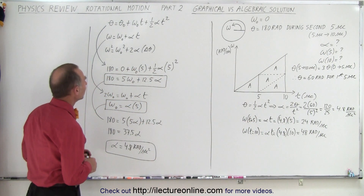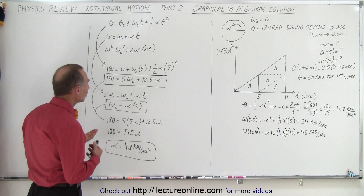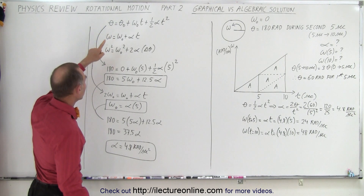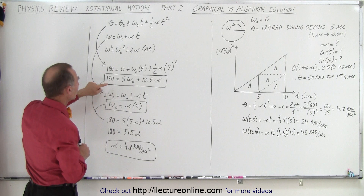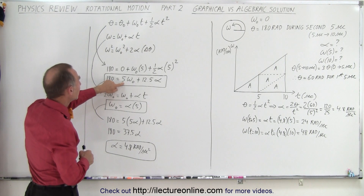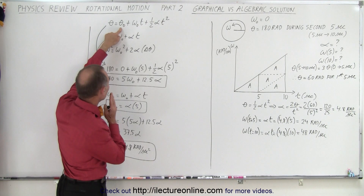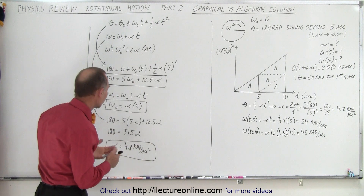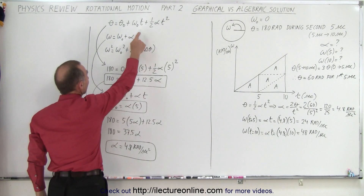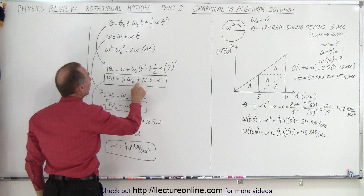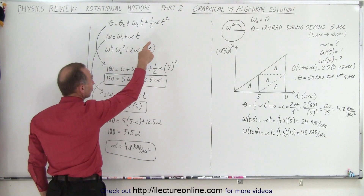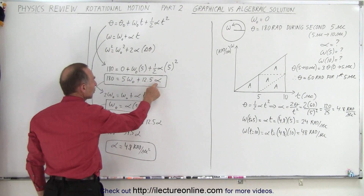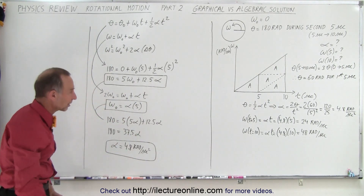If you're going to use the kinematic equations, you should write all three of them down and then see which one gives you the most information. Using the first equation for the second five seconds: we travel 180 radians, and setting the initial position to zero, we get 180 equals the initial omega times five plus one-half alpha times t squared, where t squared is 25, giving 12.5 alpha. We have two unknowns — the initial omega and the angular acceleration — so we need another equation.